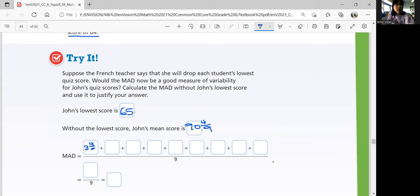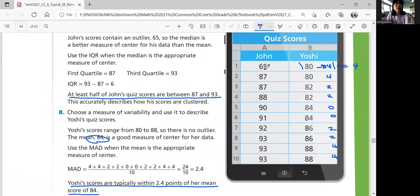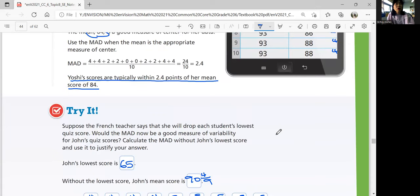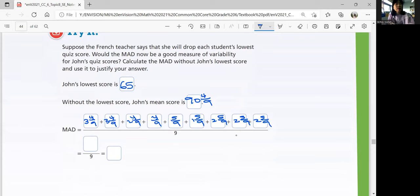And the mean score should be 90 and four over nine. So the MAD is the distances of the points to the mean. That's going to be 3, 4, 9, plus 3, 4, 9, plus 2, 4, 9, plus 4, 9, plus 5, 9, plus 1, 5, 9, plus 2, 5, 9, and plus 2, 5, 9, and plus 2, 5, 9, again. So you're going to find, this is the distances of these points, except 65. These points to your mean score, 94, 9. And then you add them up and divide it by nine. When you add them all up, you get 19 and 5, 9. If you divide it by nine, you get 2 and 14 over 81.